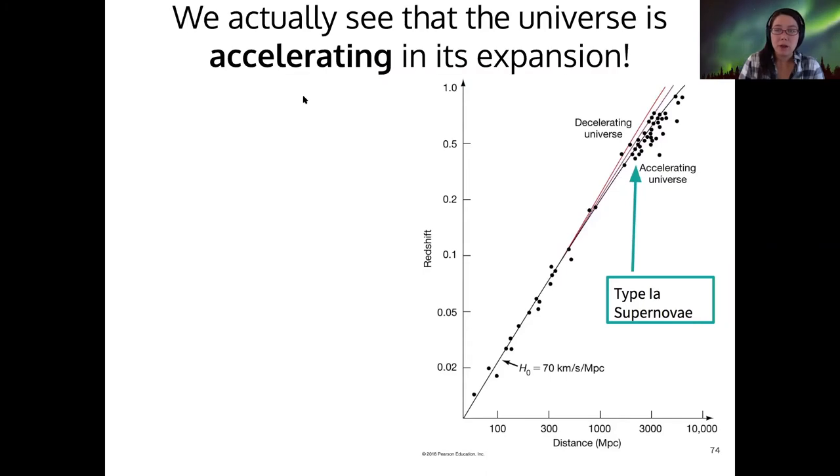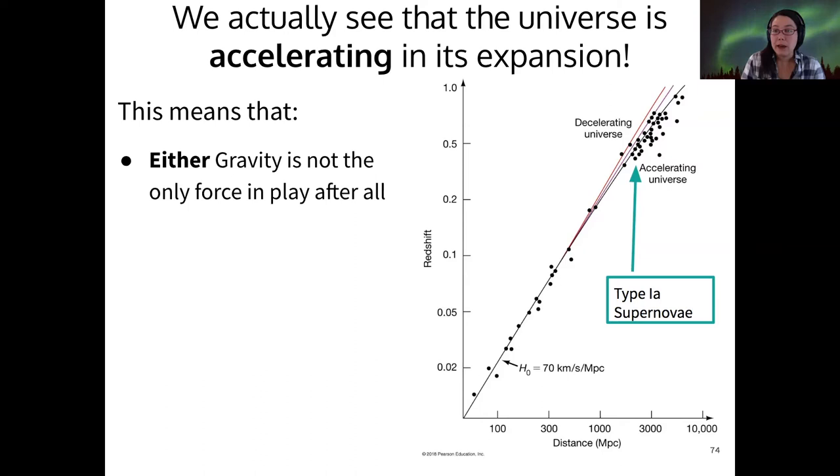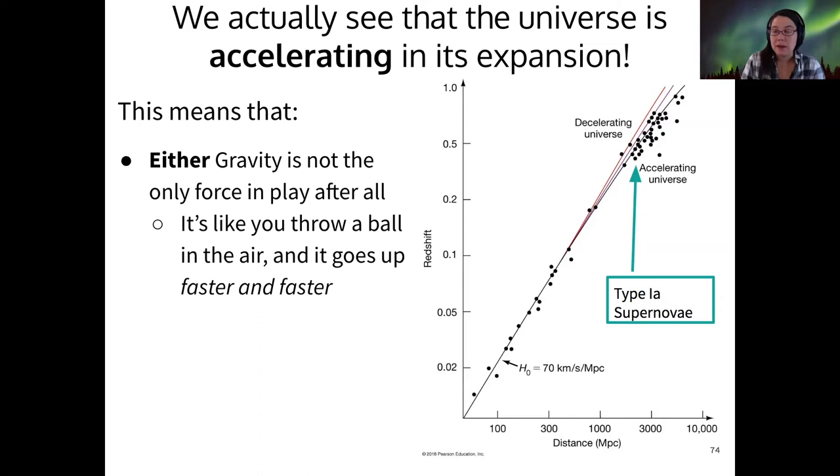We also know that our universe is accelerating in its expansion, right? So we know that either gravity isn't the only force that we have to deal with. The idea of an accelerating universe is like, instead of throwing a ball up in the air and it comes back down, you throw a ball up in the air and accelerates faster and faster away from the earth. So accelerating universes are odd.